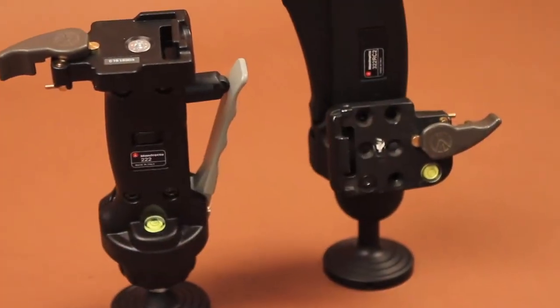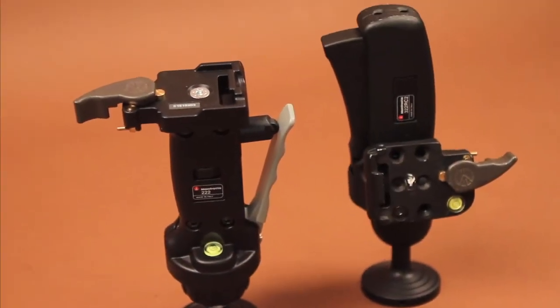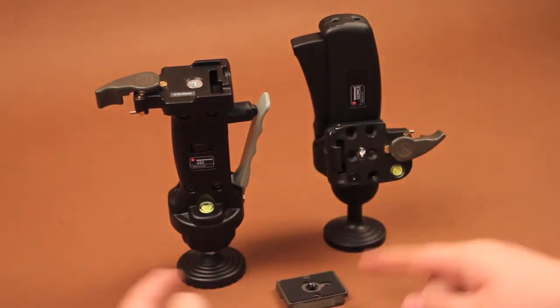Here we have the .222 joystick head and the .32-2 RC2 head, which have the exact same quick release.